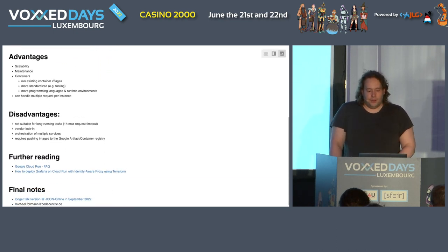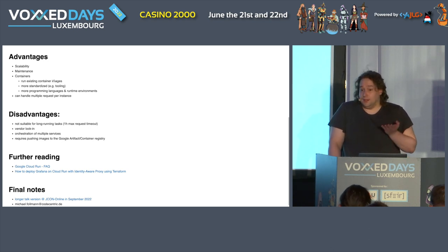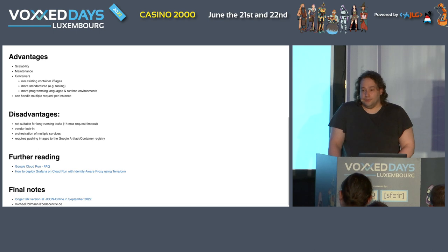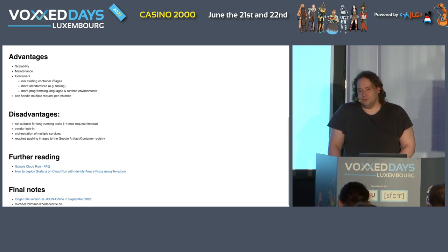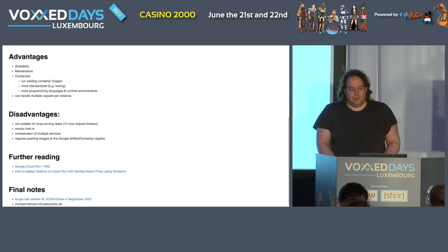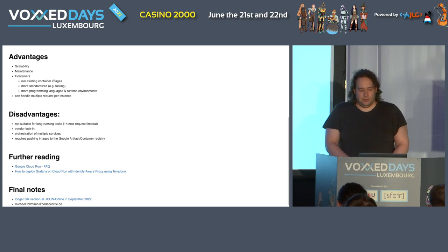For me the main advantages are scalability, maintenance, and that it uses containers. You can use existing images like the Grafana image — you don't have to code everything from scratch. The tooling is more standardized with containers, and in theory you could also use more languages and runtime environments. But actually, since you're in the Google Cloud, it's safe to assume you want to use other Google Cloud services, so you're probably still limited to what the Google SDK offers as languages. Compared to Cloud Functions, one Cloud Run instance can also handle multiple requests.